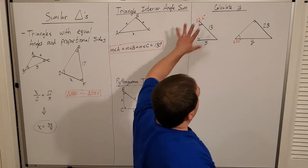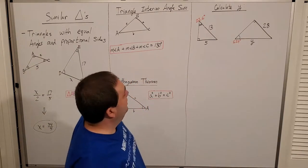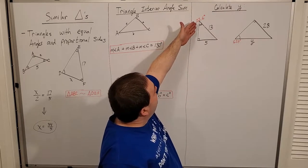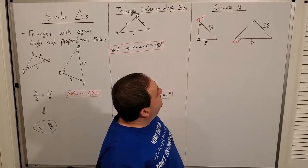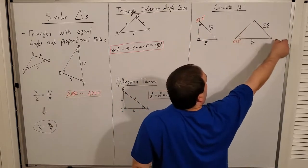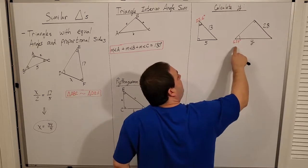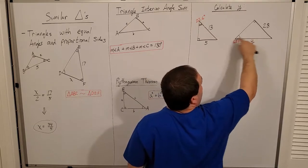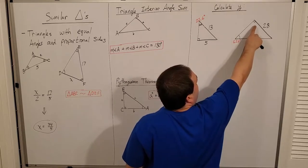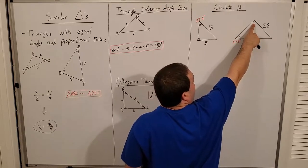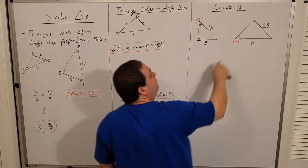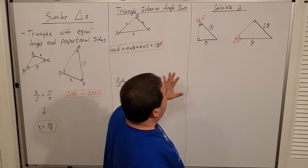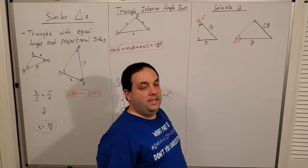Let's take all of this together and solve a quick example problem. I've got a right triangle here with sides 5 and 13, and a 22.6-degree angle at the top. I have another triangle that has one side being 28 and a 67.4-degree angle. I'm looking for the length of the hypotenuse, Y, in the second triangle. I know it's the hypotenuse because it's across from the right angle.